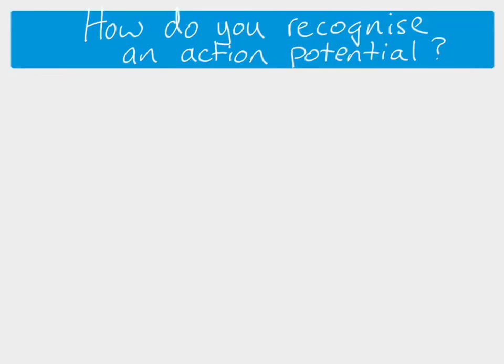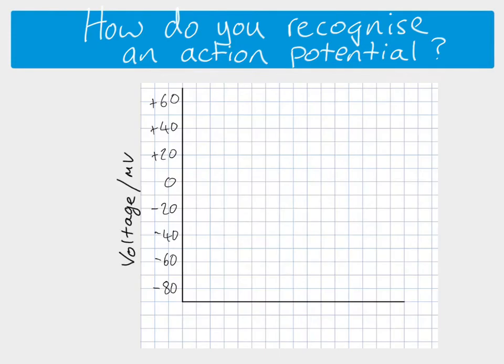Today we're looking at the idea of an action potential. We use a graph because action potentials are all about voltage or potential difference. If we look at how the voltage across a membrane changes over time, we can see what an action potential looks like. To start with, we'll be at our resting potential, which is minus 70 millivolts, and then as a result of some sort of stimulus, what we get is depolarization.